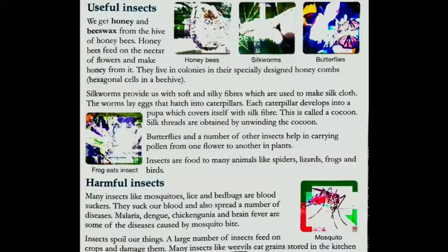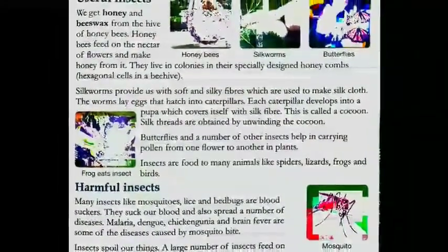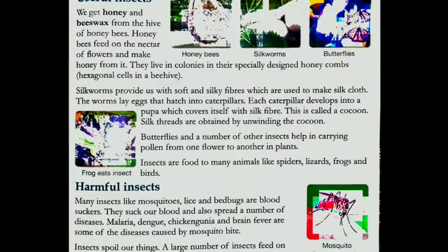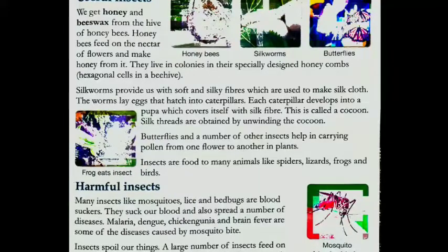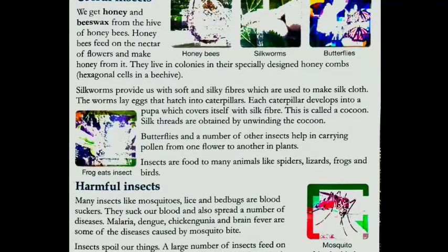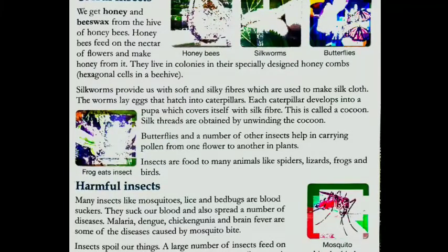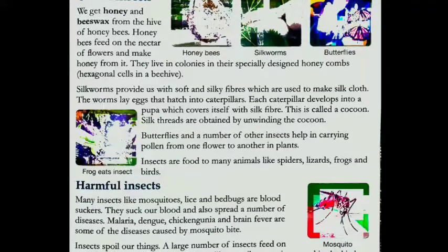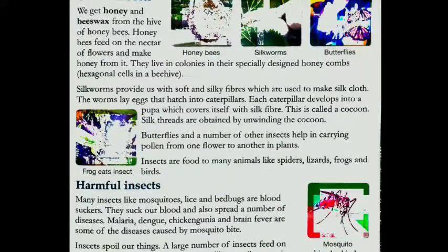Kuch hamaare jo insects hote hai woh bahut useful hote hai. Jaisi humne baat kari honey bee ki — we get honey from the honey bee. We get honey and beeswax from the hive of honey bees. Honey bees feed on the nectar of the flower — yaani ki flower ka jo nectar hota hai usko honey bee suck karti hai, phir usse woh honey banaati hai.